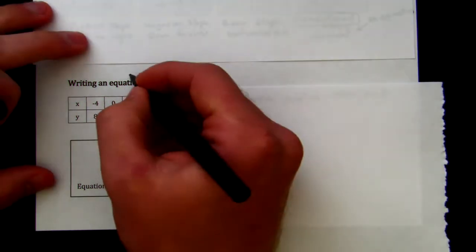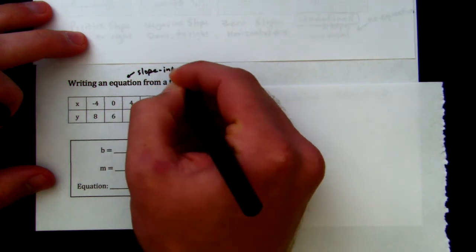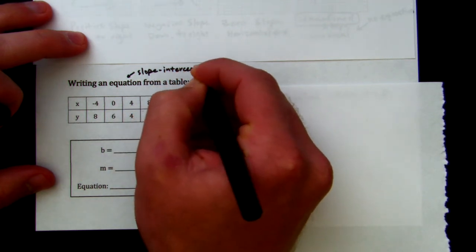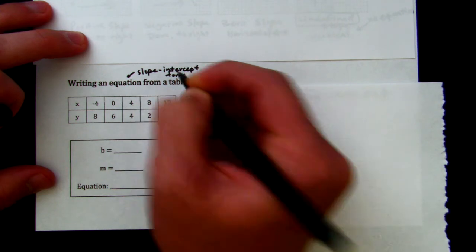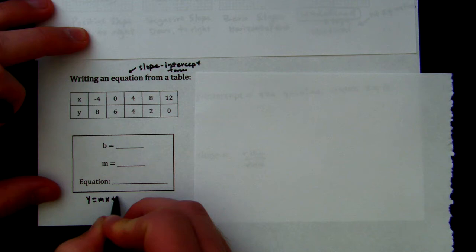We are writing an equation from a table. This is just a quick review video in case you forgot anything. In order to write an equation, when we say write an equation, we mean write in slope-intercept form. And what that form is, I'm going to write it down here: y equals mx plus b.